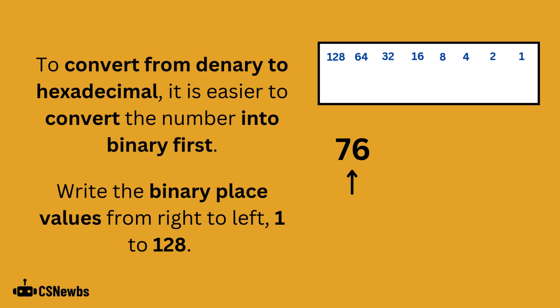To convert from denary to hexadecimal, it is easier to convert the number into binary first. Write the binary place values from right to left from 1 to 128 for an 8-bit number.